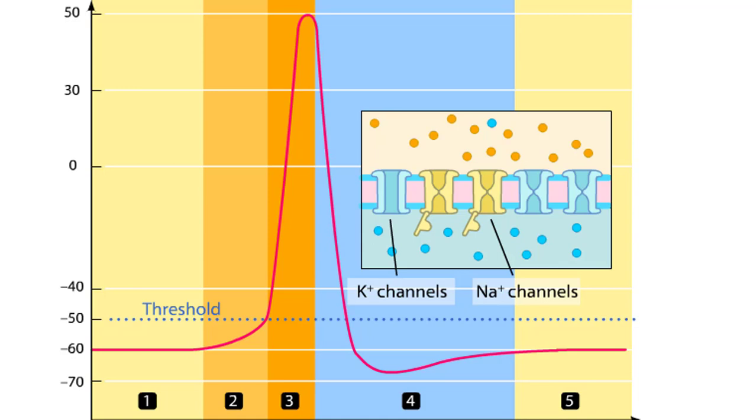The action potential can be divided into five phases: the resting potential, threshold, the rising phase, the falling phase, and the recovery phase.